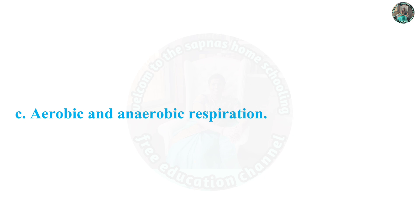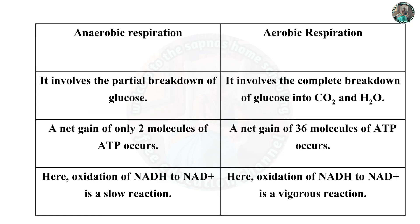C. Aerobic and anaerobic respiration: Anaerobic respiration involves a partial breakdown of glucose, and a net gain of only two molecules of ATP occurs. Oxidation of NADH2 to NAD+ is a slow reaction. Aerobic respiration involves a complete breakdown of glucose into carbon dioxide and water, with a net gain of 36 molecules of ATP. Oxidation of NADH2 to NAD+ is a vigorous reaction.